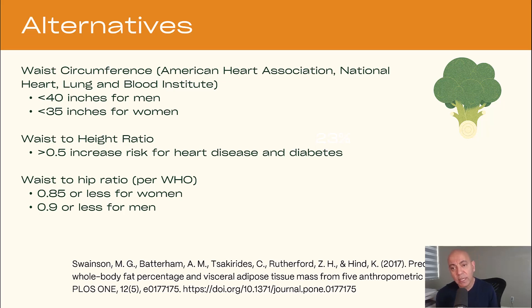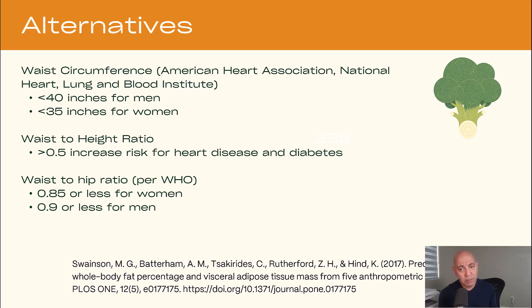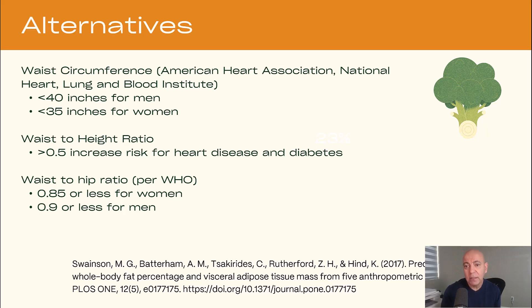Another option is waist-to-hip ratio. The idea is that you want your waist to be smaller than your hips. For women, you want a ratio of 0.85, and for men, 0.9 the size of your hips. So you have waist circumference, waist-to-height, or waist-to-hip as alternatives.